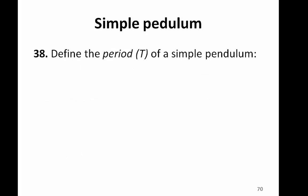In a simple pendulum experiment, the time taken for one complete oscillation is called the period of the pendulum. And the symbol that we use is a capital T.